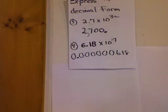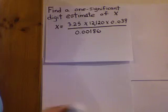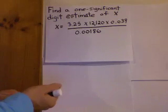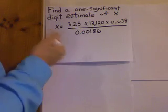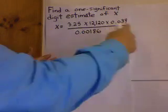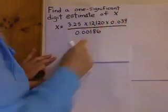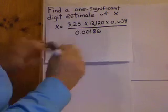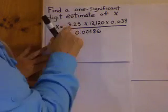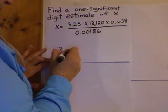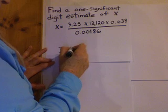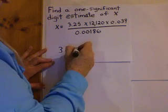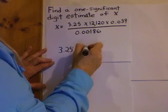Alright, one other thing you're going to have to do tonight. Sometimes you're going to be asked to find a one-digit estimate of x. The problem's going to look like this. You can see you have a lot of decimal numbers multiplied by each other. First thing you want to do is put them all in scientific notation. 3.25. Hey, that looks like scientific notation. So, it's really 3.25 times 10 to the zero.